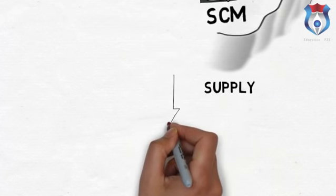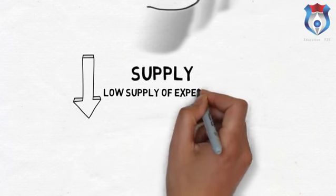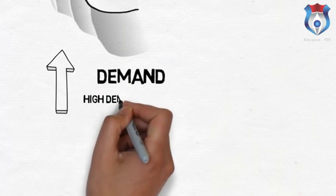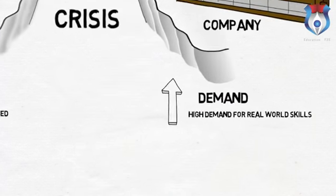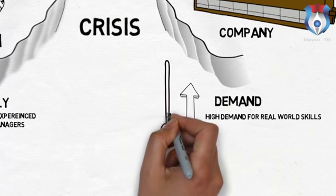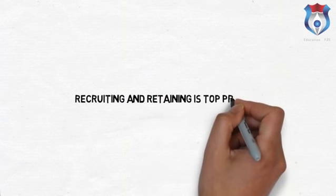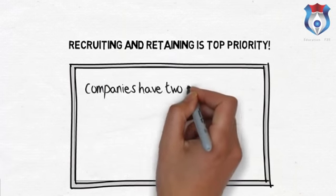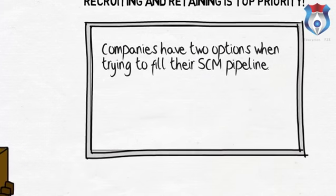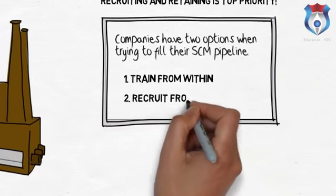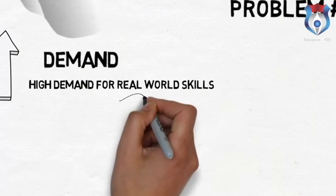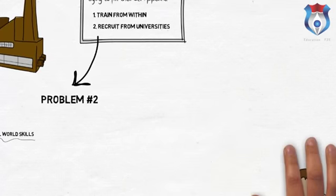The supply side of the equation is the number of experienced supply chain managers with the skills that companies are looking for, and unfortunately it is low. The demand side represents the number of companies actively seeking supply chain managers with real-world and proven skills — and on this side, demand is very high, rising year after year. Because of these facts, recruiting and retaining supply chain managers with proven real-world skills is a top concern for most companies. Currently, companies can either train people from within or recruit talent from top universities around the world.